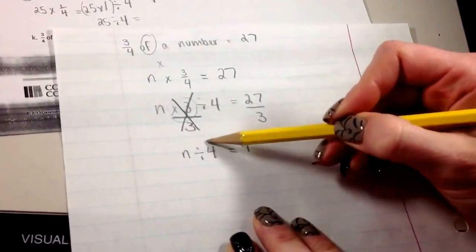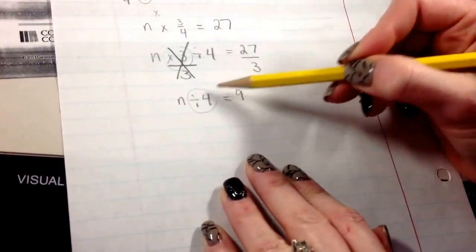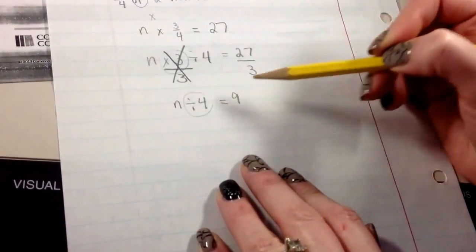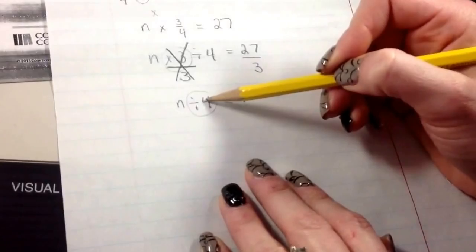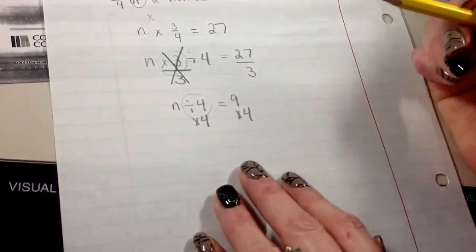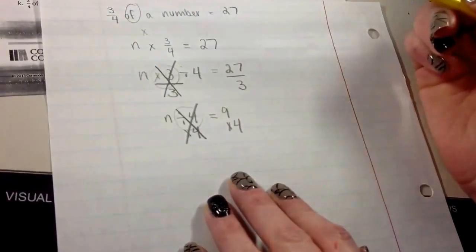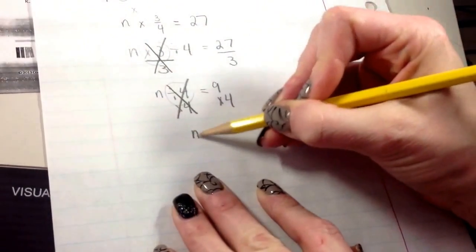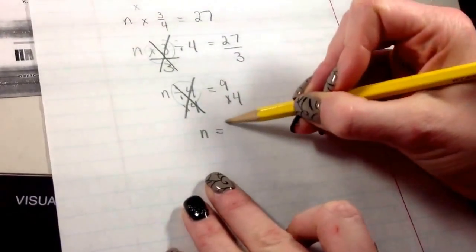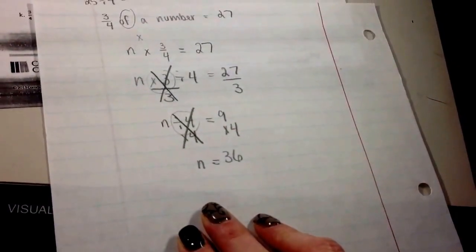Now I need to get rid of this divide by 4. So again, I'm going to do the exact opposite, but I have to do it on both sides to keep this equal. This is like a balance. The equal sign is showing that it's balanced. So divided by 4, I would multiply by 4, but I want to do it on both sides. I can't do something to one side of the equation and not the other. This neutralizes it and kind of cancels each other out. So then you have n equals, well, 9 times 4 is going to give you 36. So I know my mystery number is 36.